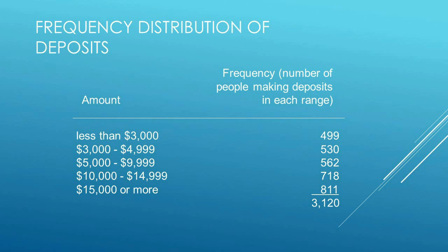The next thing to look at is frequency distribution. A frequency distribution pigeonholes numbers into categories. For example, a frequency distribution of deposits might have categories like 'less than $3,000', '$3,000 to $4,999', and so on. We had a total of 3,120 deposits and we're placing them into categories based on their value. From this, we can determine that the most frequent deposit is in the $10,000 to $15,000 range.